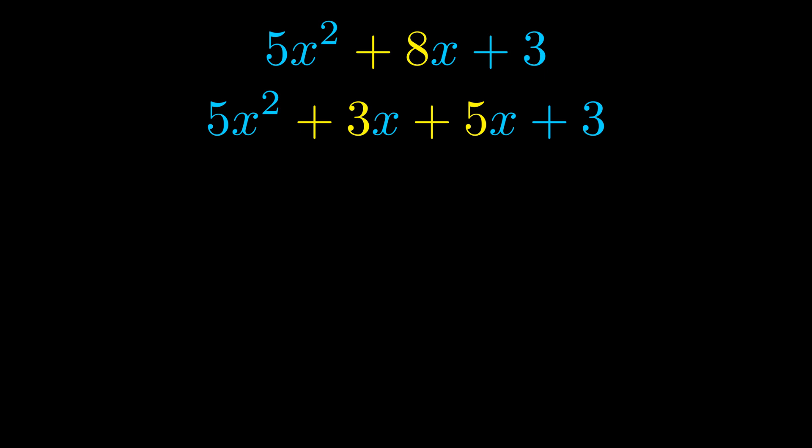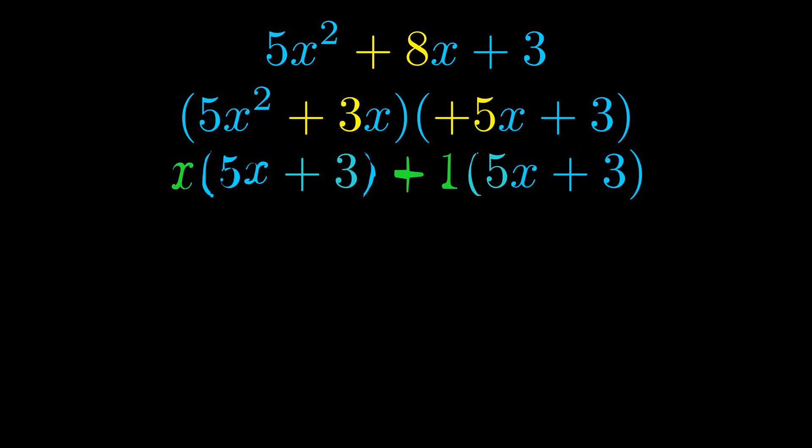Once we've done this we put parentheses around the first term and the last term. And we do that so that we can take the greatest common factor out of both terms. We can see the greatest common factor is now outside in green.